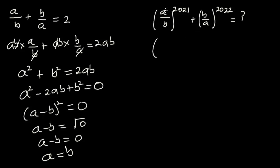So in this case, we have a over here, so in place of a I'll write b. So I'm going to have b over b exponent 2021, plus we have b over a, so in place of a over here I'll write b, so b over b exponent 2022.